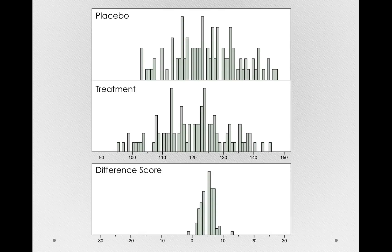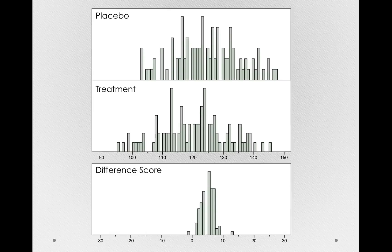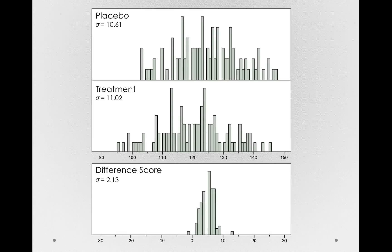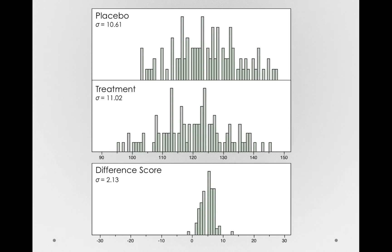But notice how non-variable that difference score column is. That is, the difference scores range from just a little under zero to a little over positive 10. I've actually taken the difference score of placebo minus treatment in this case. Now notice, if you were simply looking at that difference score histogram, and notice where the center is relative to zero, it's a pretty obvious effect. That is, it's pretty obviously the case that individuals are getting some relief. That is, their treatment is lower than the placebo. And if I actually give you the variances or standard deviations of each of these distributions, you can see that the difference score column is considerably less variable.